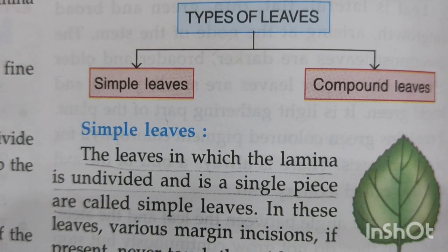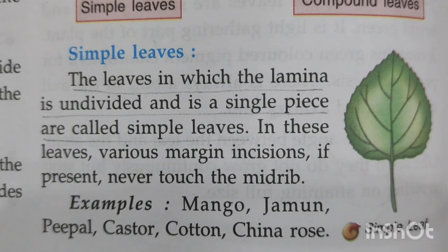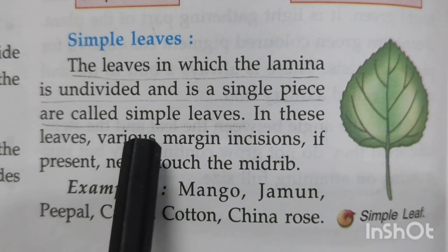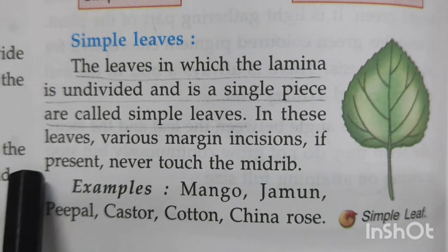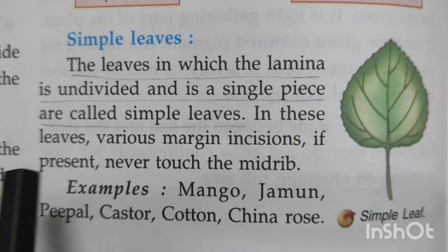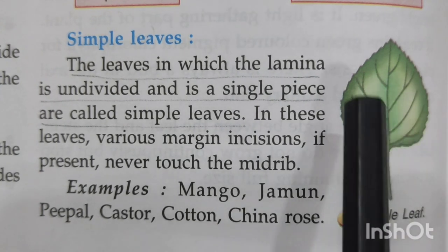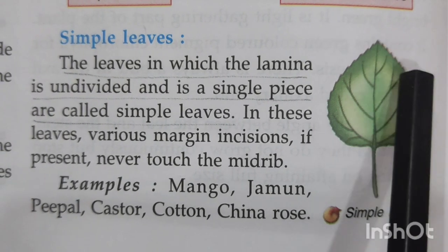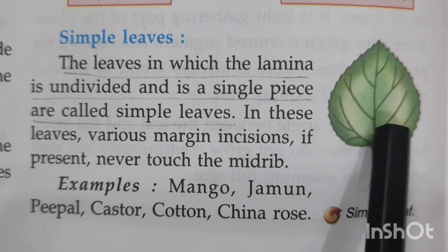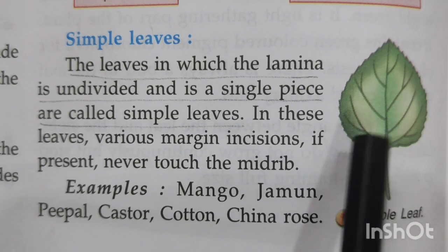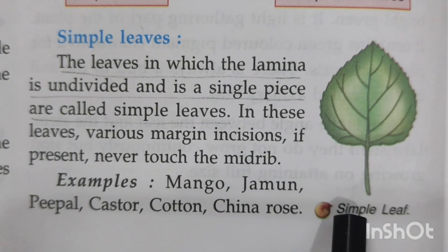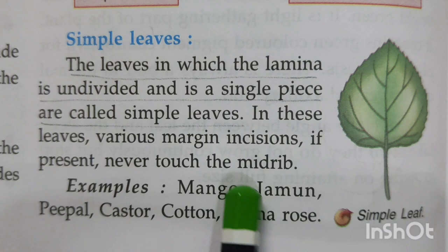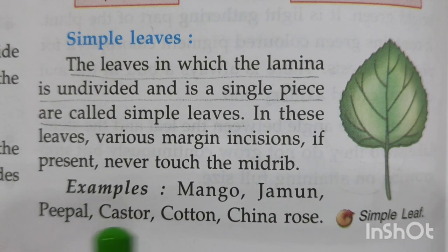As you can see the picture of a simple leaf, leaves in which the lamina is not divided — that is, it is undivided and in the form of a single piece — are called simple leaves. In these leaves, margin incisions, if present, will not touch the midrib. These cuttings are known as margin incisions, and they will not be deep enough to touch the midrib. Examples of simple leaves can be seen in mango, jamun, peepal, castor, cotton, and china rose.